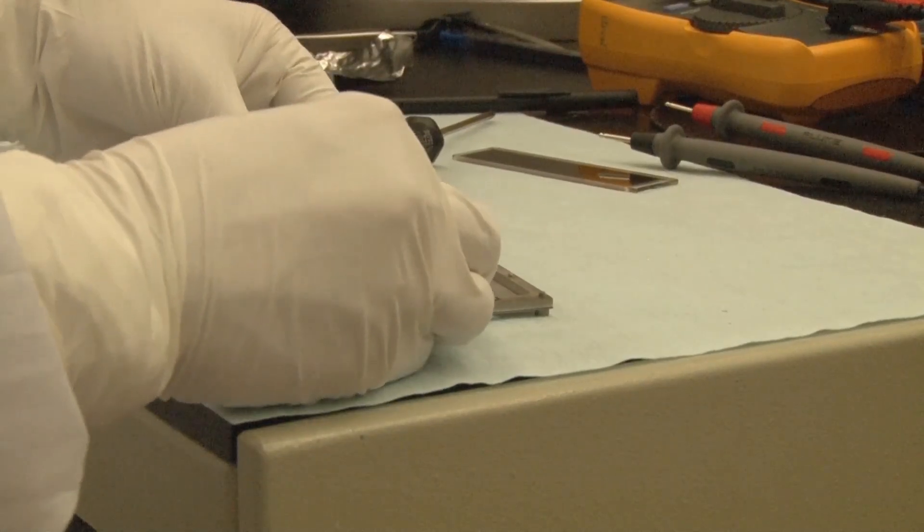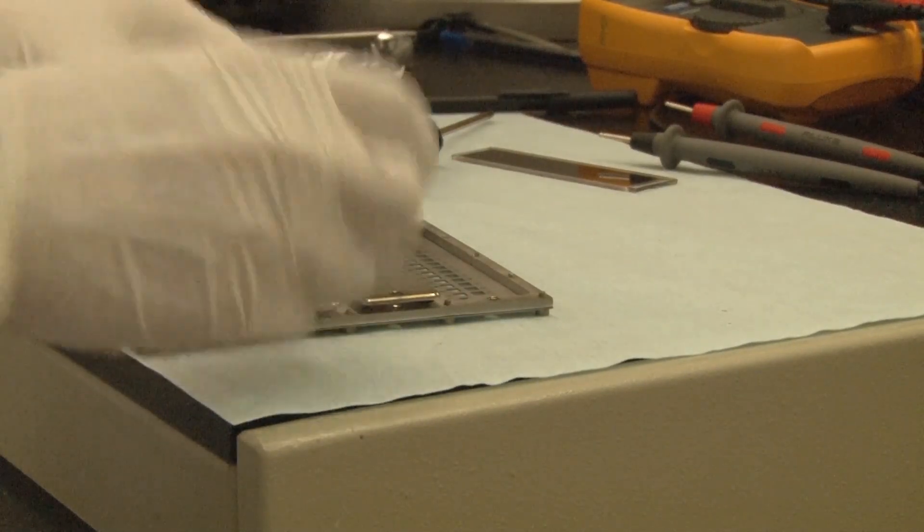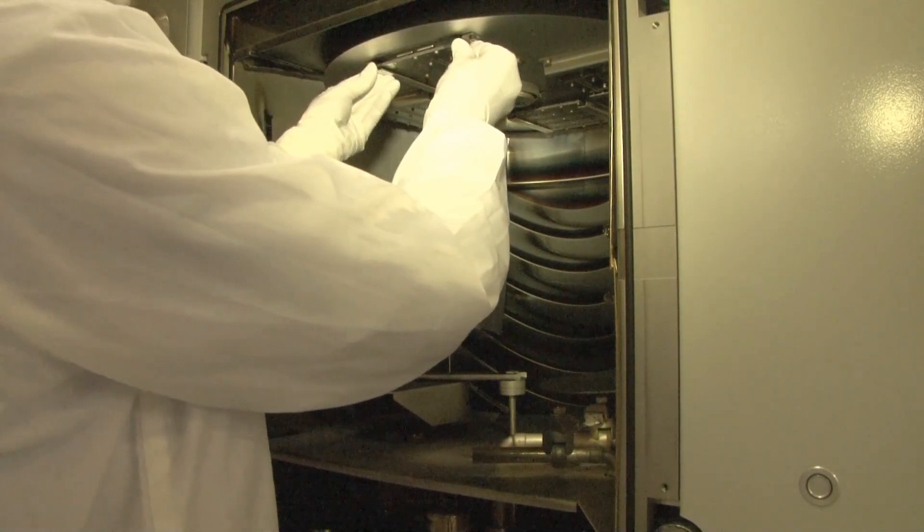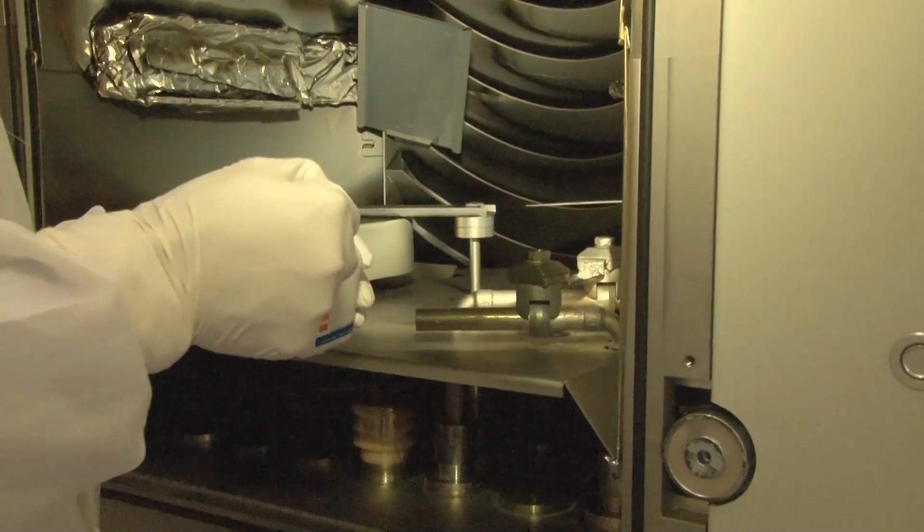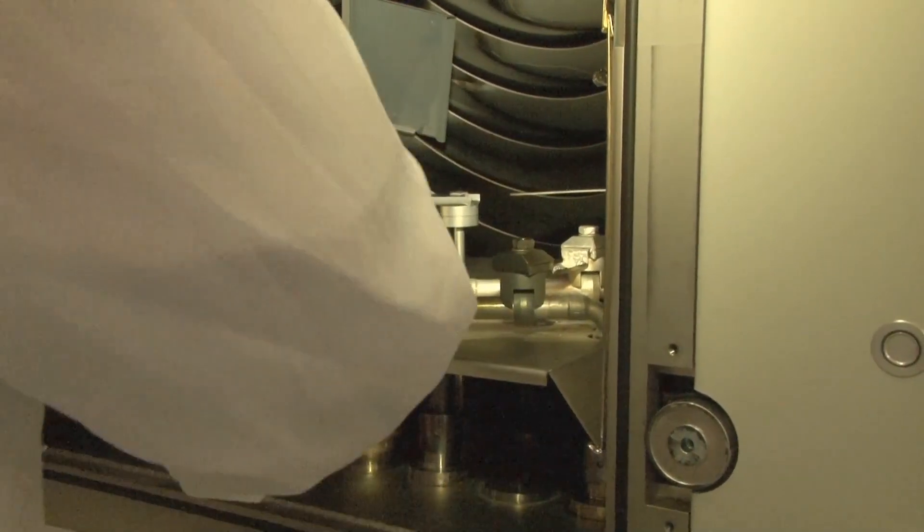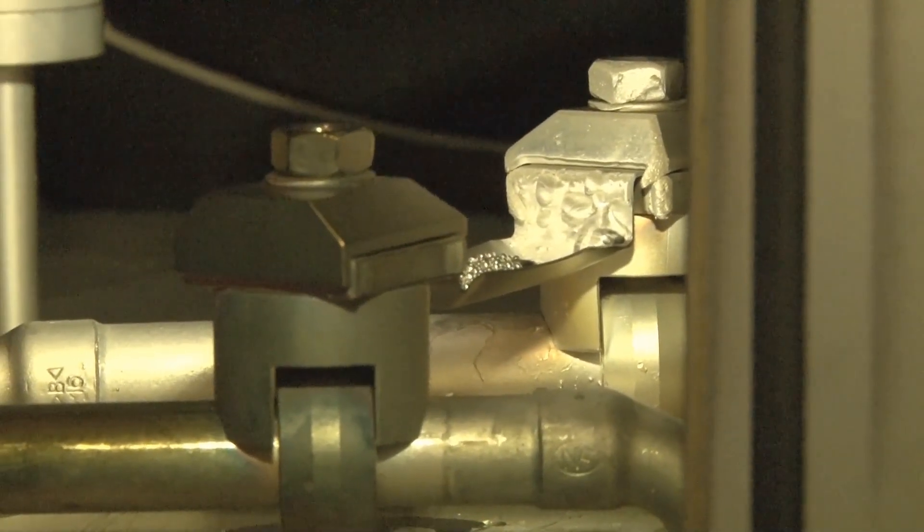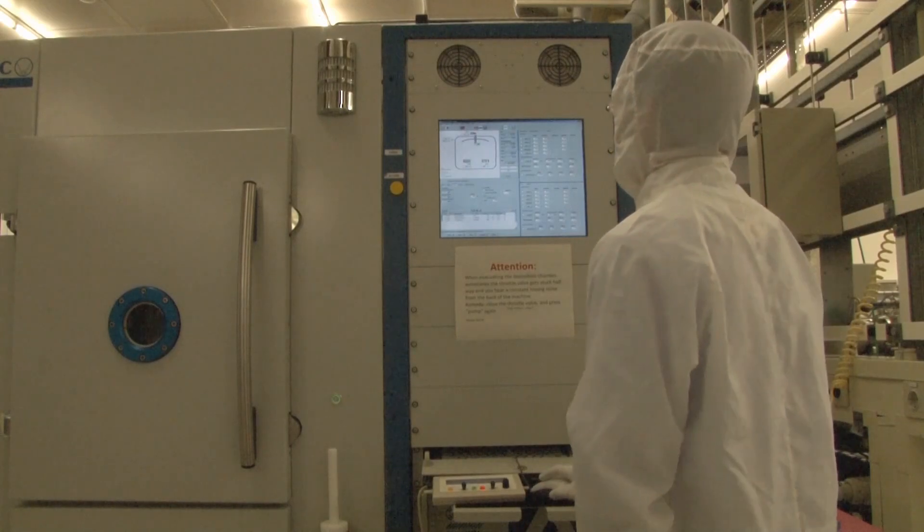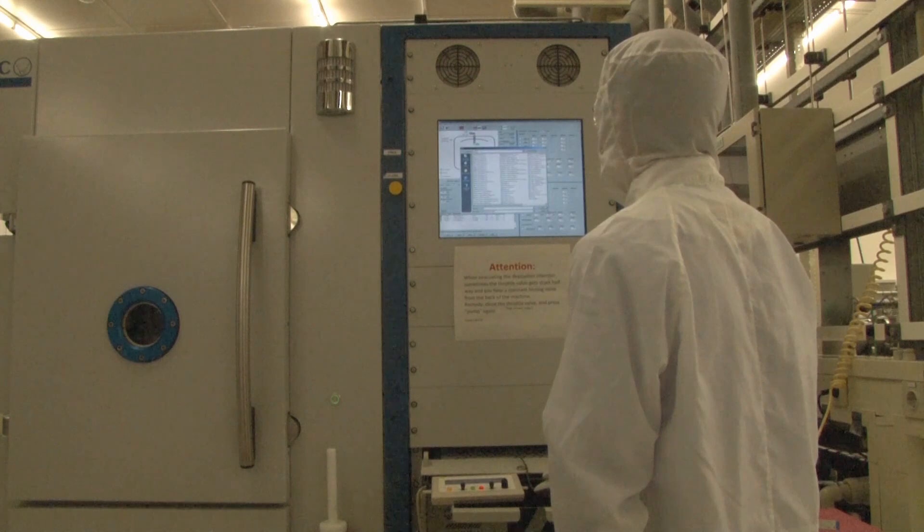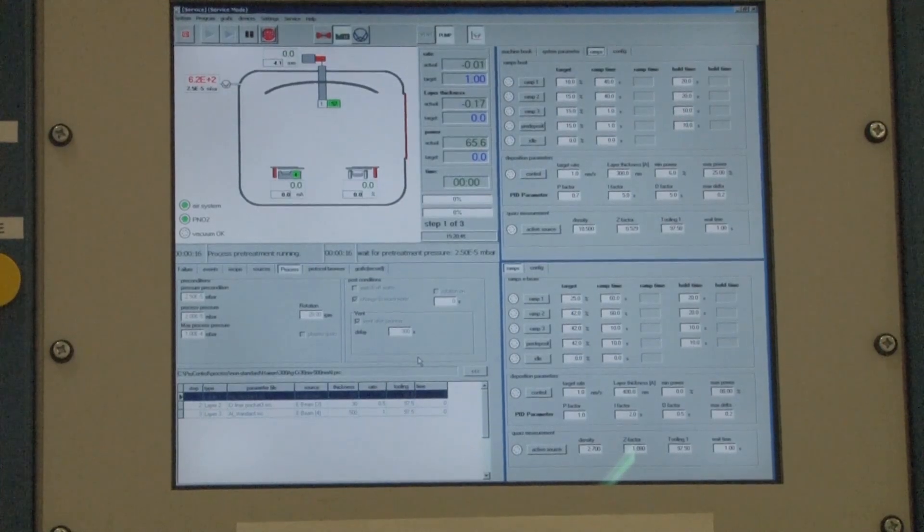Next, the samples are covered by a mask. The mask determines the areas on the sample where the metal contacts are deposited. The samples are mounted into a processing chamber. Silver is used as source material and particles of silver are put in a boat. The silver is evaporated using an electron beam. The silver vapor deposits on the samples and forms the back metal contacts.